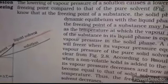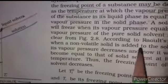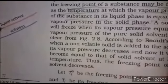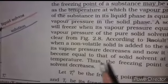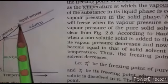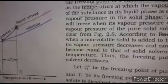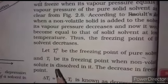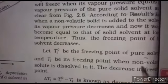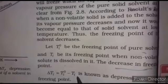According to Raoult's Law, when a non-volatile solid is added to the solvent, the vapor pressure decreases. It would then become equal to the vapor pressure of the solid solvent at a lower temperature — this is the depression in freezing point. Tf° is the freezing point of the pure solvent and Tf is the freezing point when the non-volatile solute is dissolved in it, giving delta Tf = Tf° − Tf.